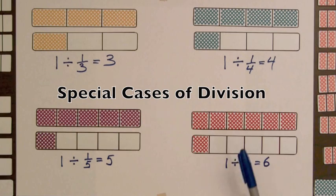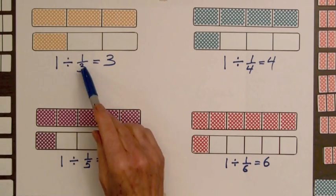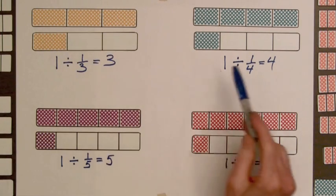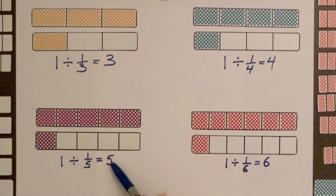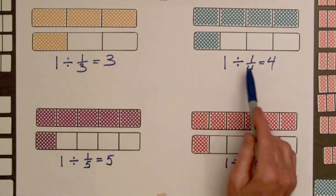Let's look at these special cases involving division of fractions. One-third divides into one three times, one-fourth into one four times, one-fifth five times, and one-sixth into a whole bar six times. Now one thing students might notice is that these numbers are reciprocals of each other.